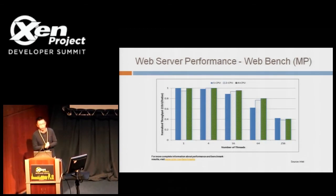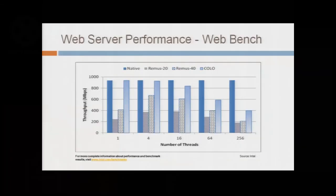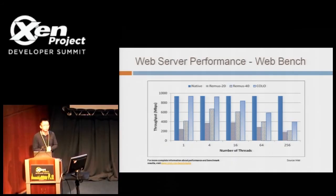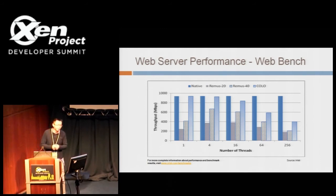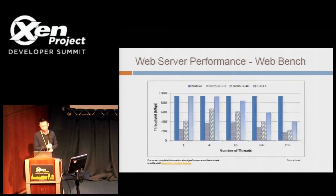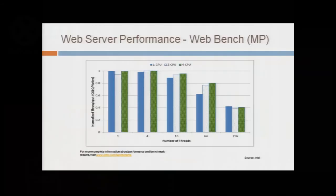A question was raised: do you have an explanation for why performance tails off on Colo when increasing the number of threads? Simply because the compare module sees more packet divergence as load increases, which triggers more frequent checkpoints and hurts performance. Of course, there's space to optimize in this area.